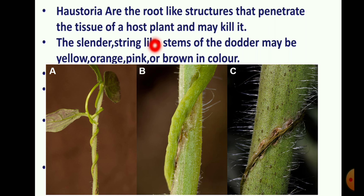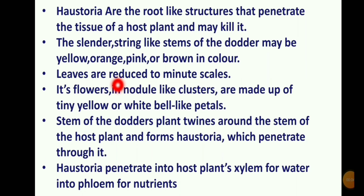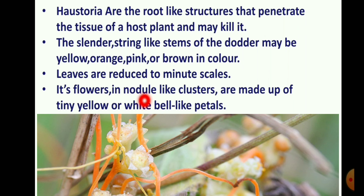The stems are stretchable and the host plant should be twined around. The stems are slender and string-like, and may be yellow, orange, pink, or brown in color. Leaves are reduced to minute scales. The flowers appear in nodule-like clusters, made up of tiny yellow or white bell-like petals.